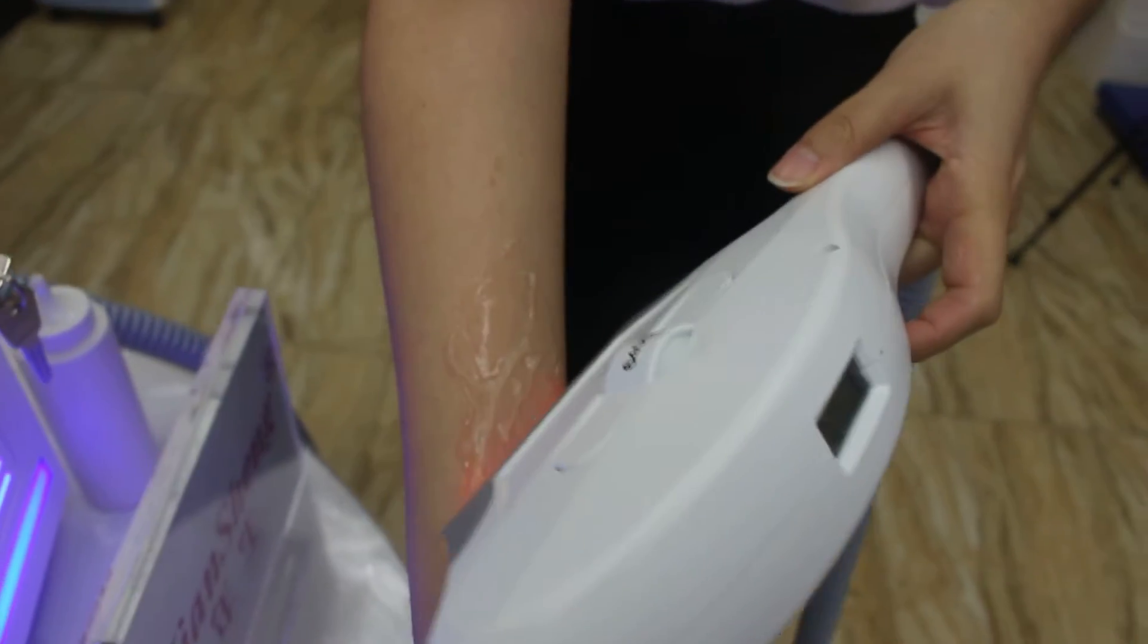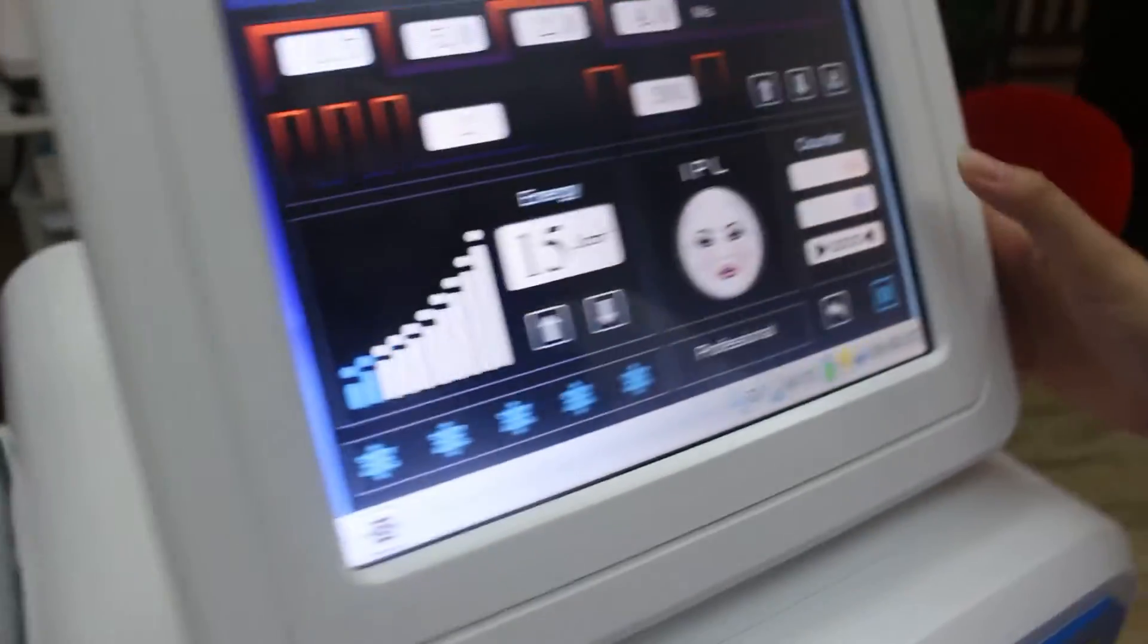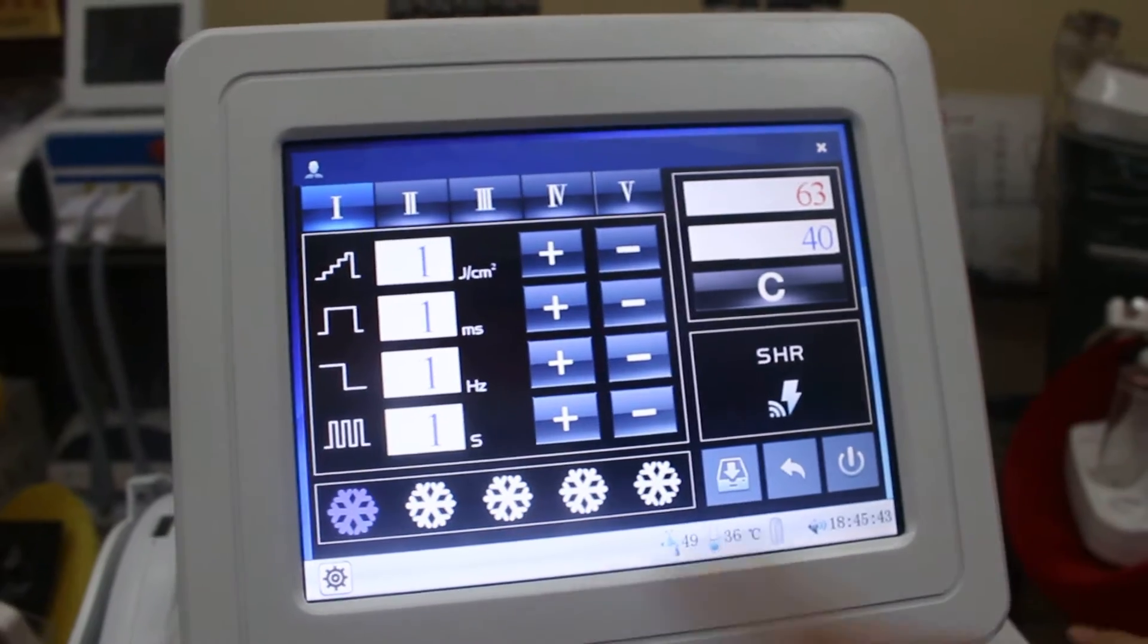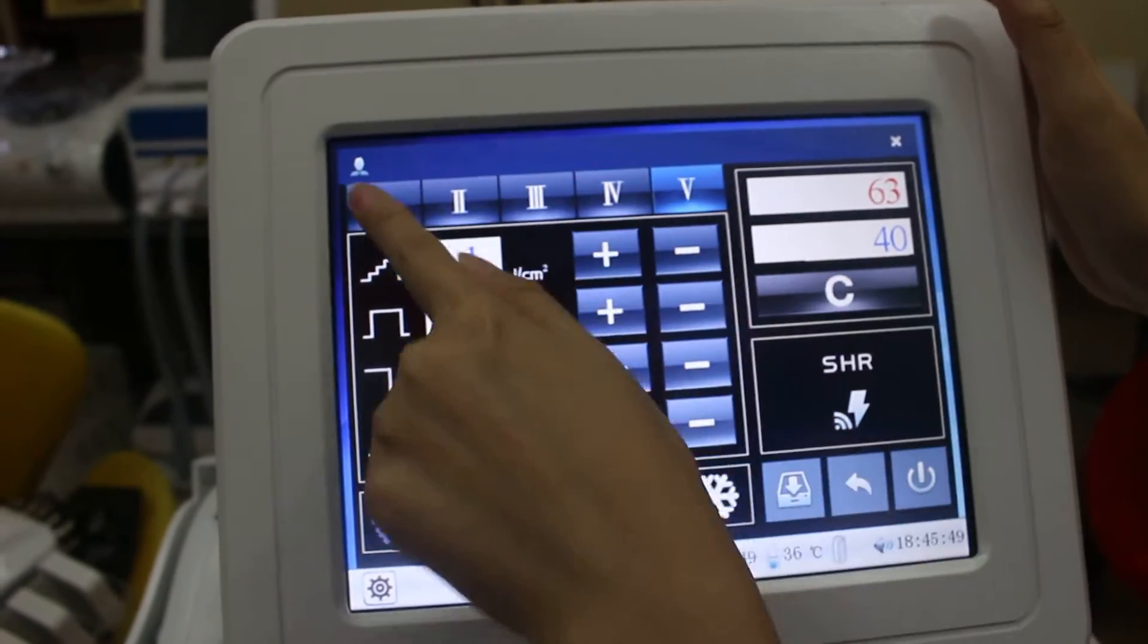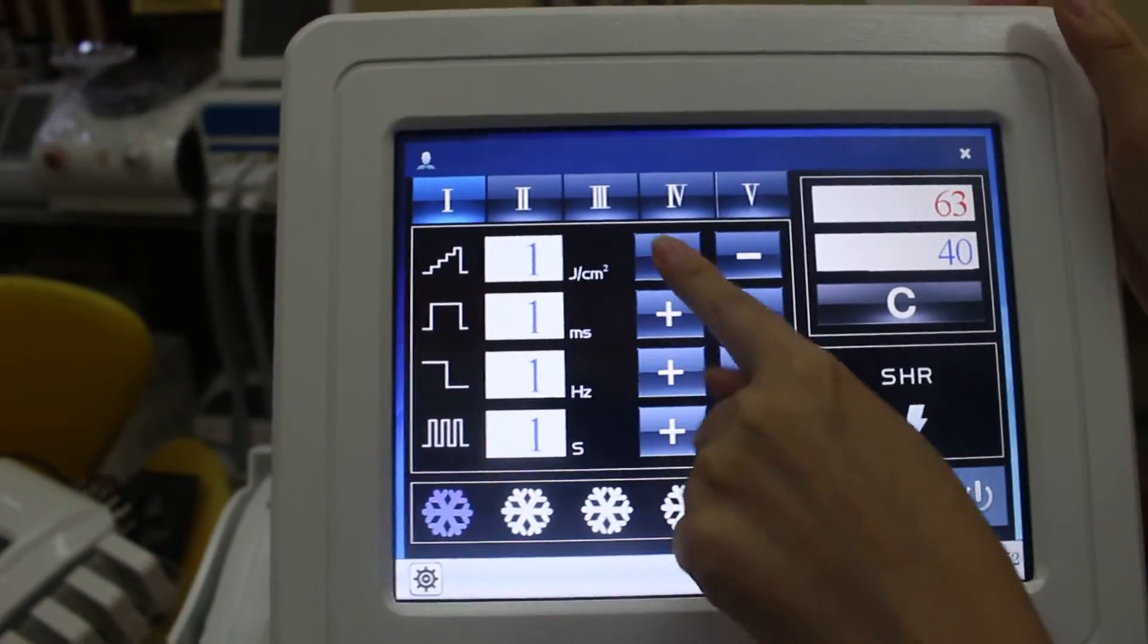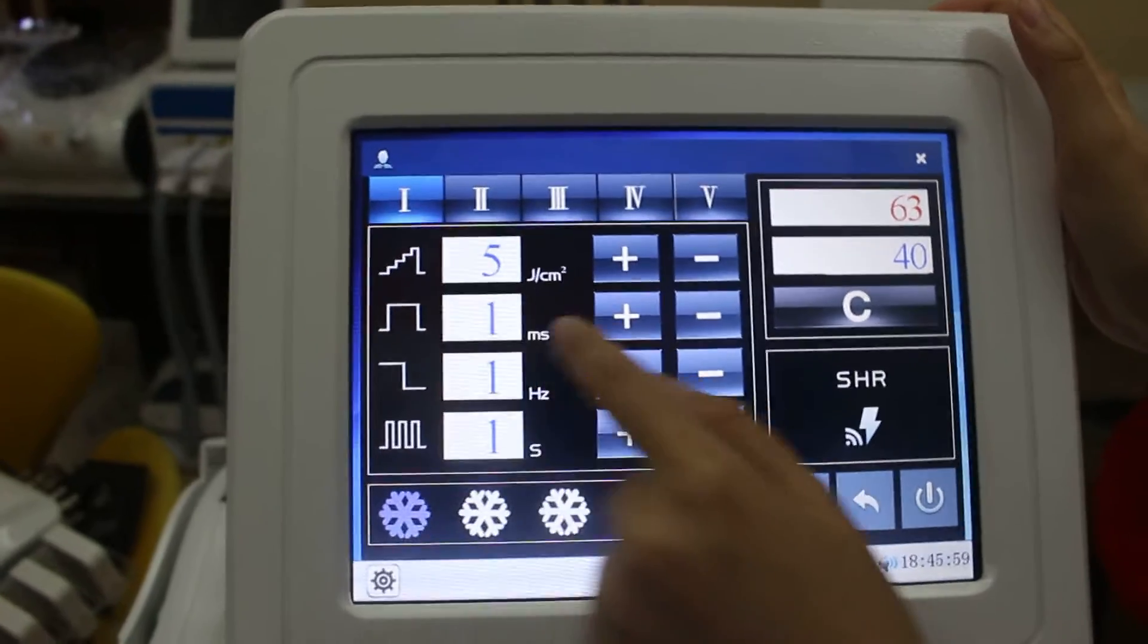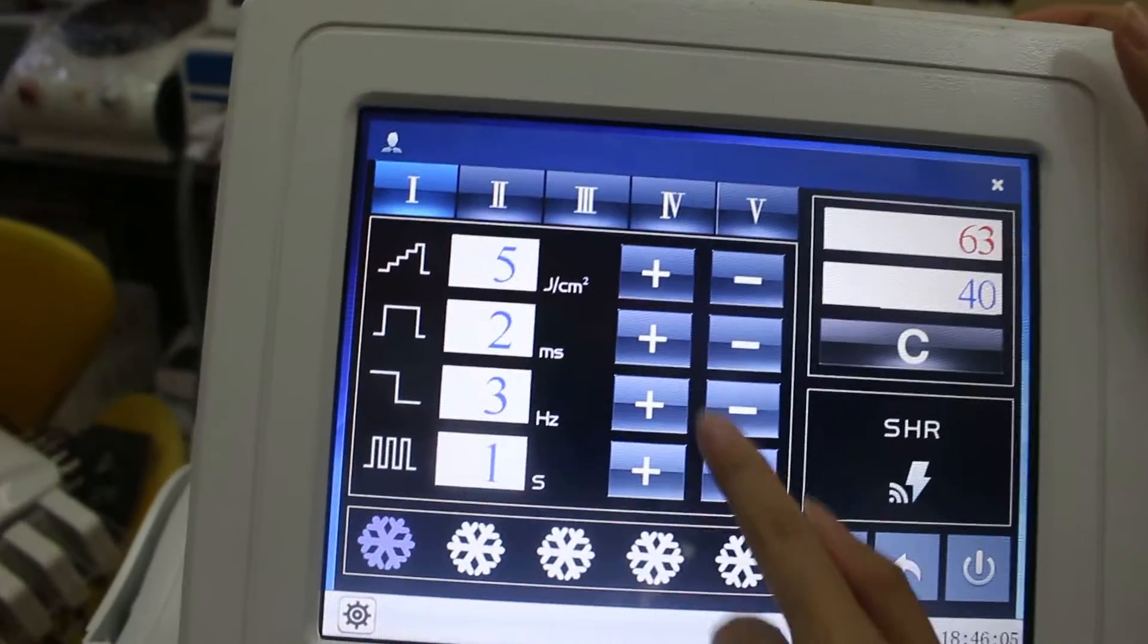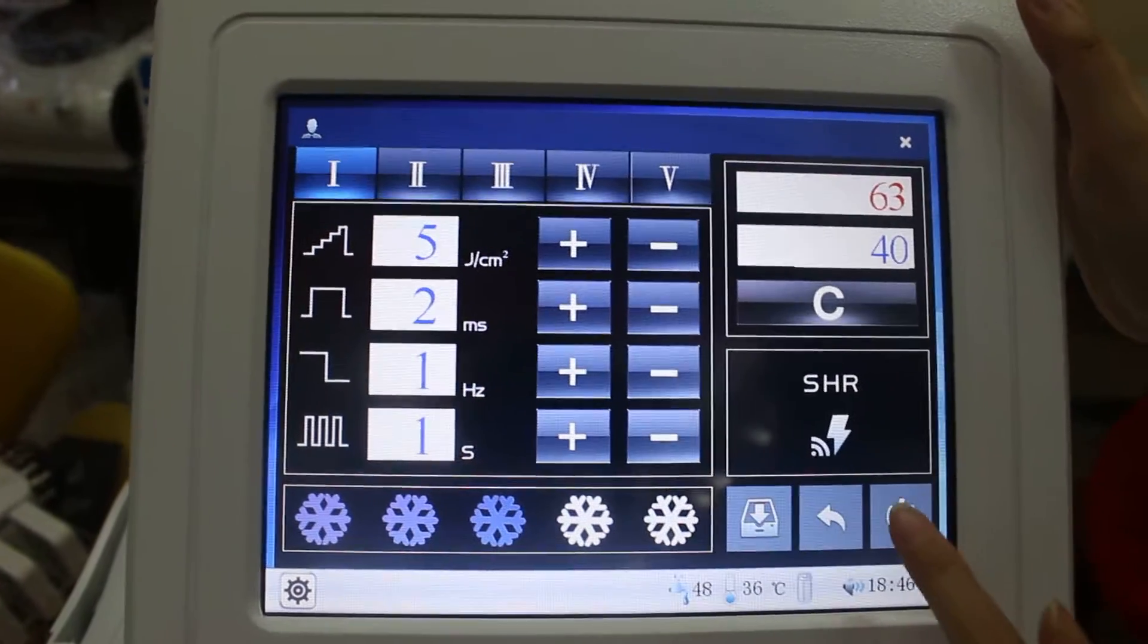Now let's see the SHR hair removal. There are 5 modes you can save. This is energy. This is weight. This is frequency. You can save. Let's begin.